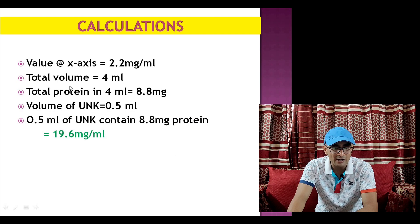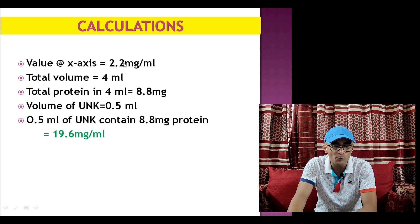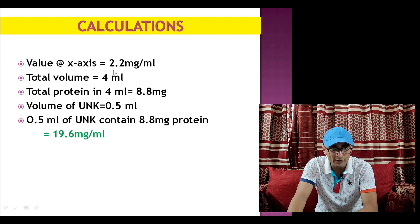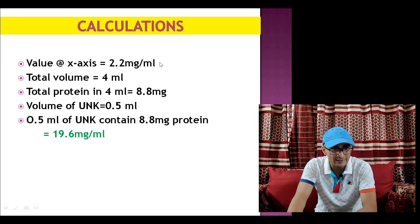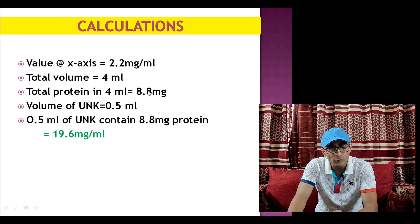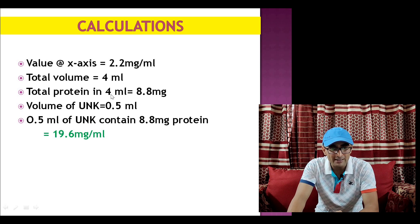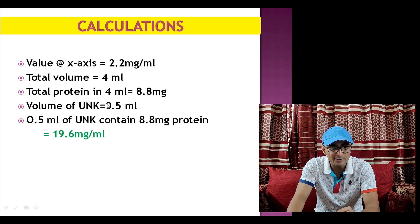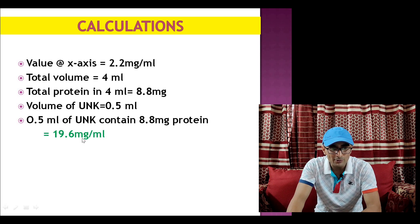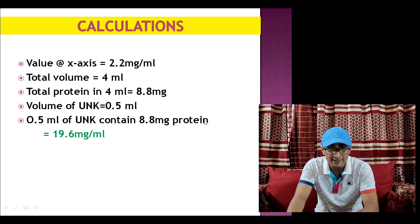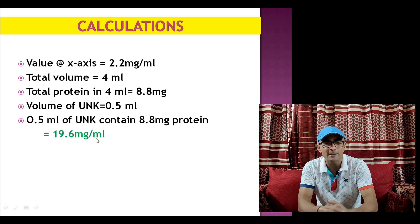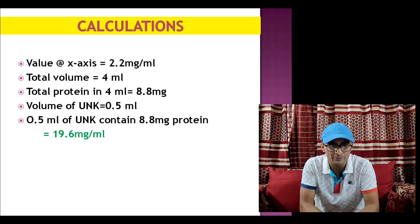From this graph what we have got at x-axis is 2.2 mg per ml and the total volume we have used in the reaction mixture was 4 ml. It means the 4 ml sample has 2.2 mg per ml protein concentration, or we can say that 4 ml of sample contains 8.8 mg protein. This 4 ml came from 0.5 ml of unknown, it means originally 0.5 ml of unknown contained 8.8 mg protein. So the concentration would be 19.6 mg per ml. That's how the concentration of unknown sample can be calculated using standard curve in this method.